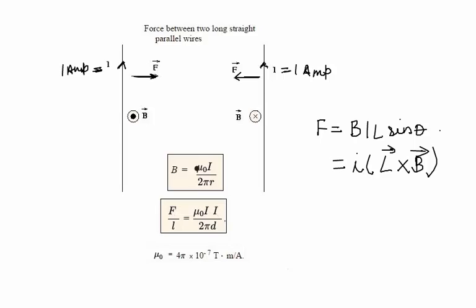Now how do we get the value of this force? We know that the magnetic field due to this wire would be μ₀I/2πR, where μ₀ equals 4π × 10⁻⁷ tesla meter per ampere.